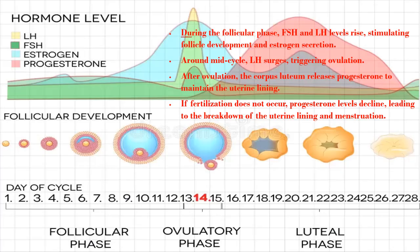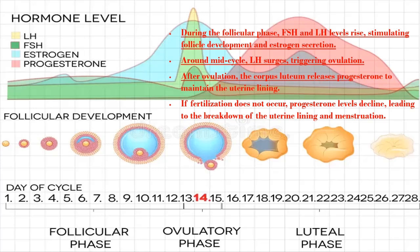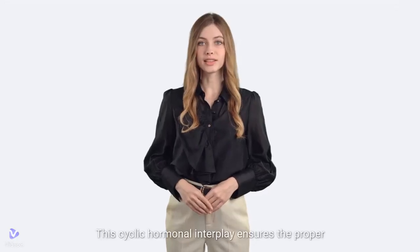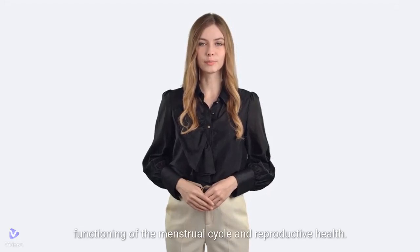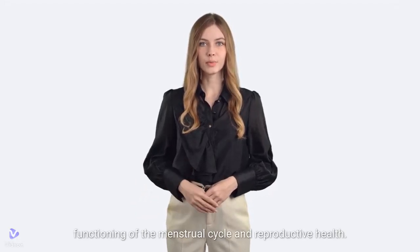Hormonal regulation: during the follicular phase, FSH and LH levels rise, stimulating follicle development and estrogen secretion. Around mid-cycle, LH surges, triggering ovulation. After ovulation, the corpus luteum releases progesterone to maintain the uterine lining. If fertilization does not occur, progesterone levels decline, leading to the breakdown of the uterine lining and menstruation. This cyclic hormonal interplay ensures the proper functioning of the menstrual cycle and reproductive health.